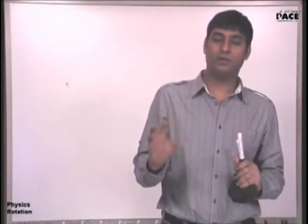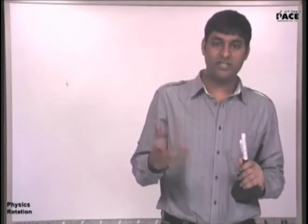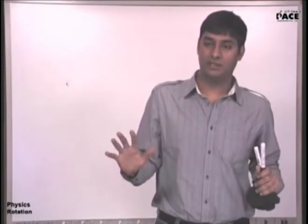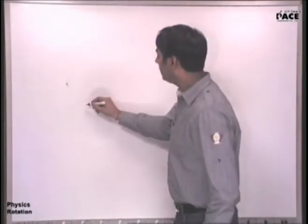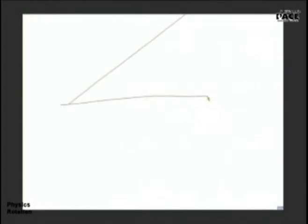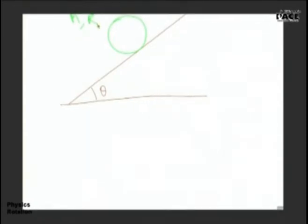Now we come to simple problems and we understand what kind of problems are in rotation. Let me give you a problem which came in IIT. This angle was given to be theta and there is a sphere which is rolling down on this inclined plane. The mass of this sphere is m and the radius is r. The question was: find the friction force acting between this sphere and the inclined plane.